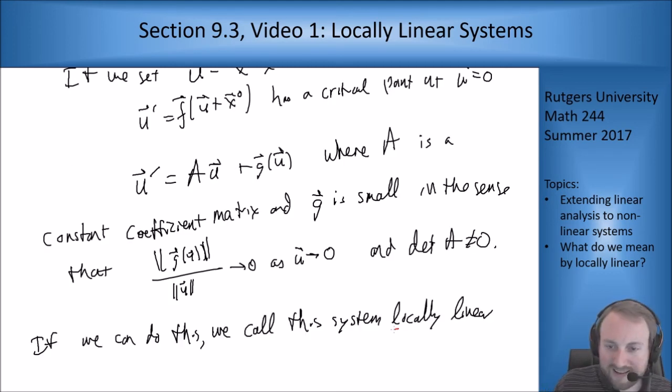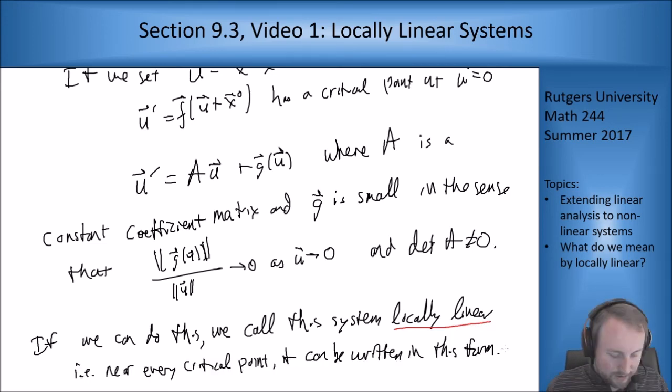Locally linear means if near every critical point I can write it in this form. Now it may look like this is pretty nasty trying to be able to prove that you can do this, but it turns out that for most things we consider, for most nice enough functions, it's really easy to show you can do this and that's what we're going to start with the next video.